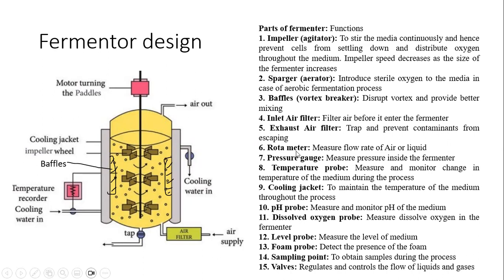Then we have a rotameter, which basically measures the flow rate of air or liquid that is entering or exiting from the fermenter. Then we have a pressure gauge, which will measure what is the pressure inside the fermenter.